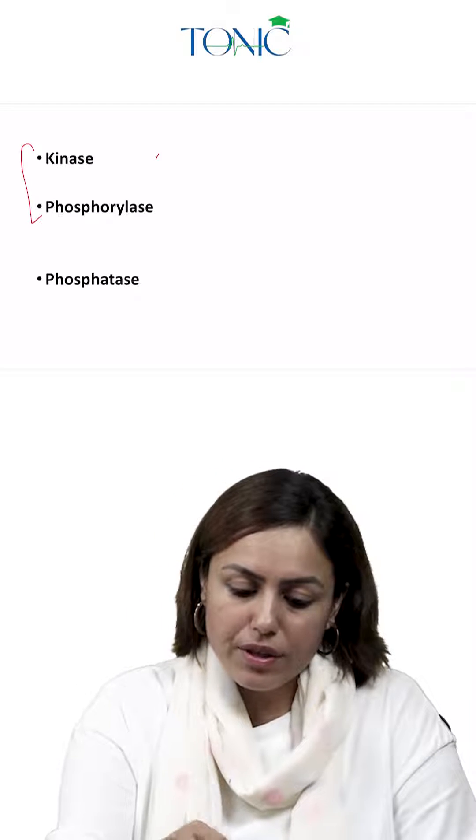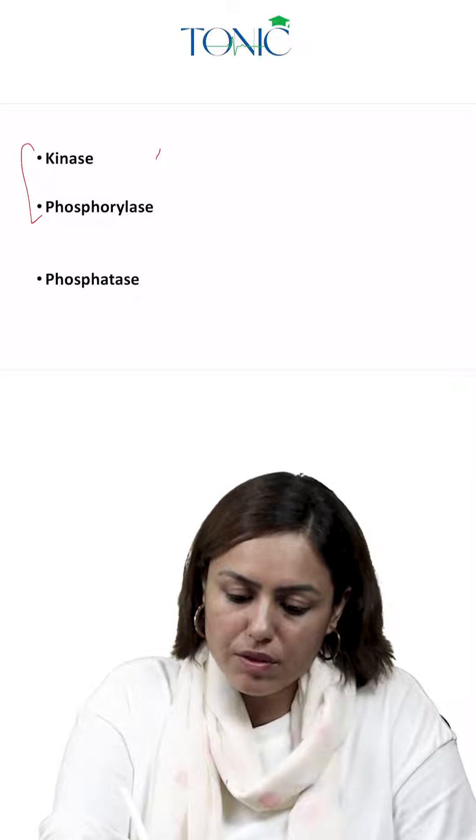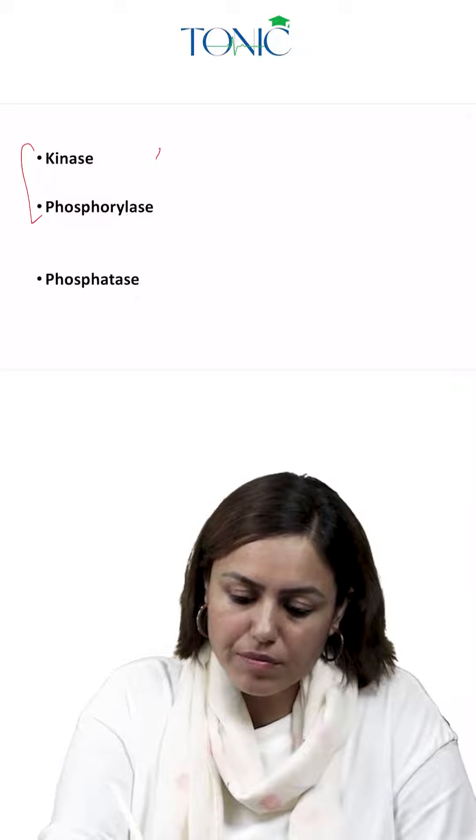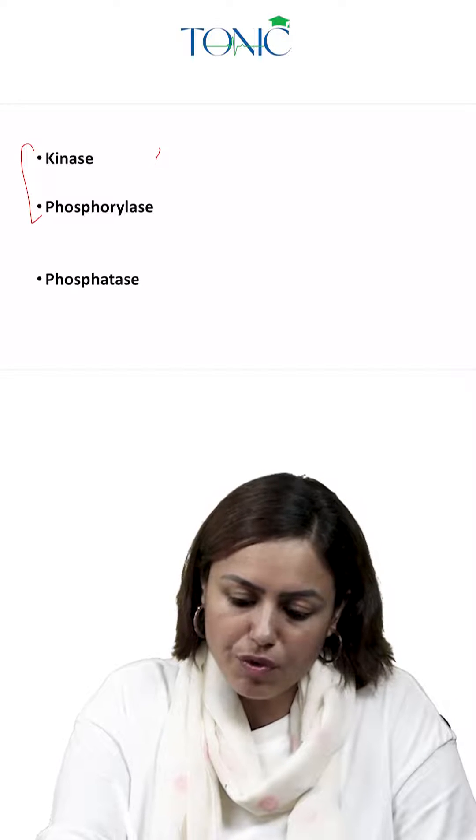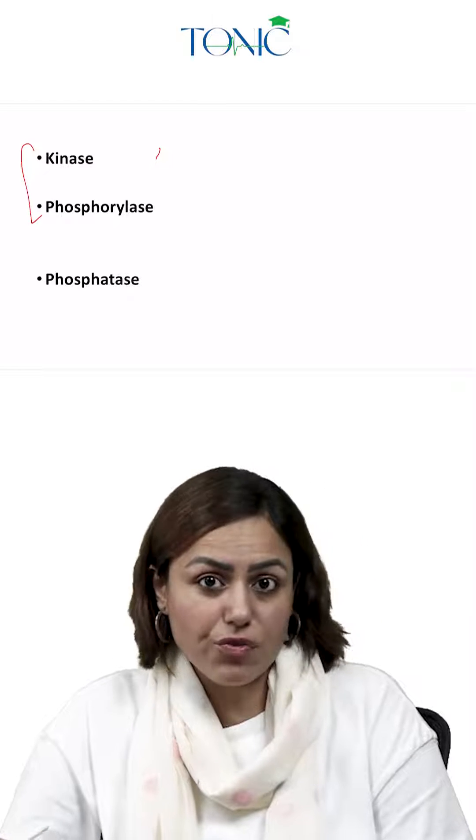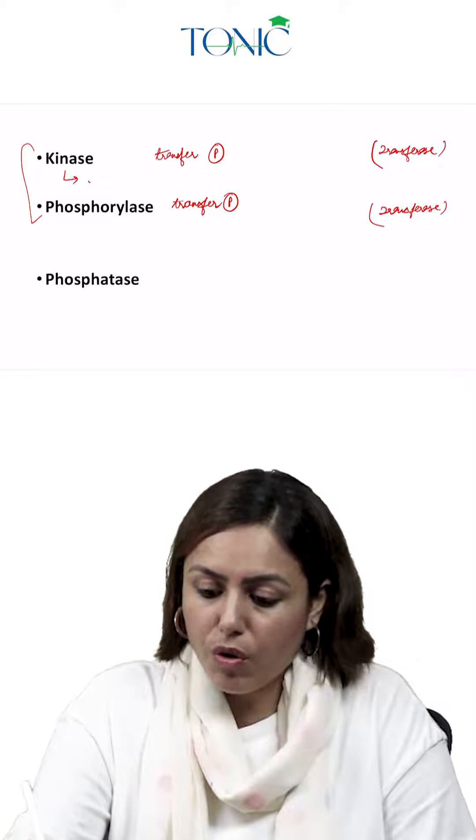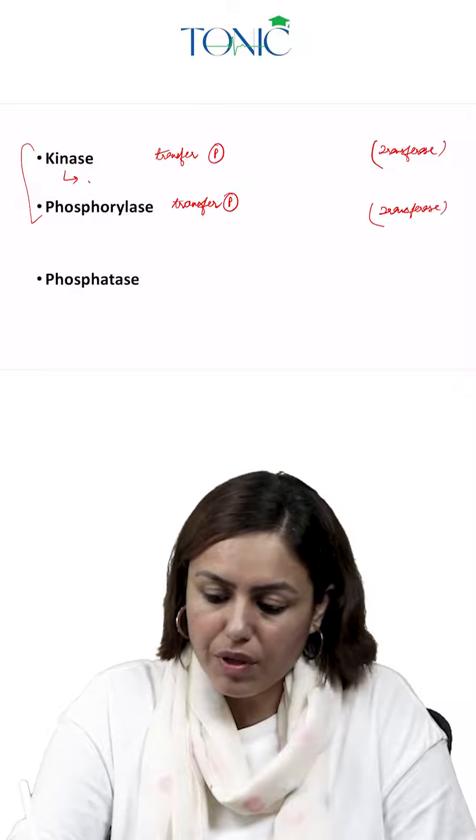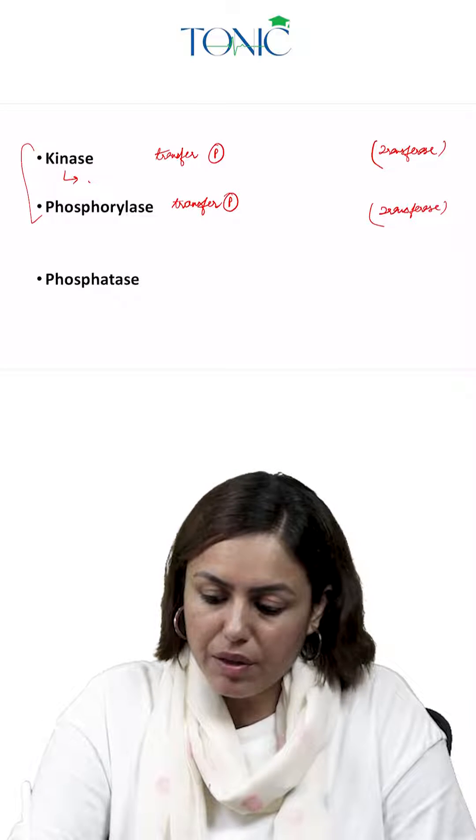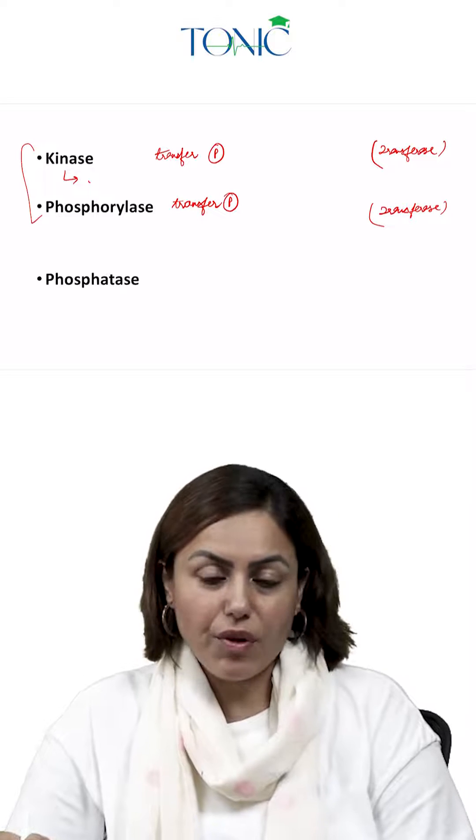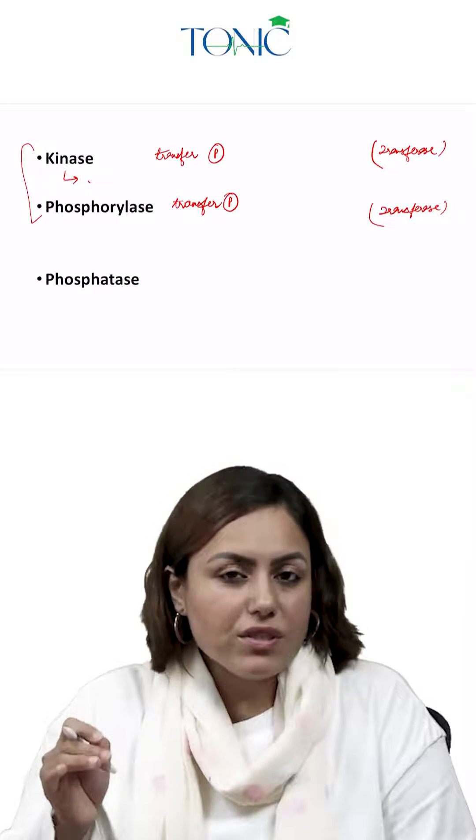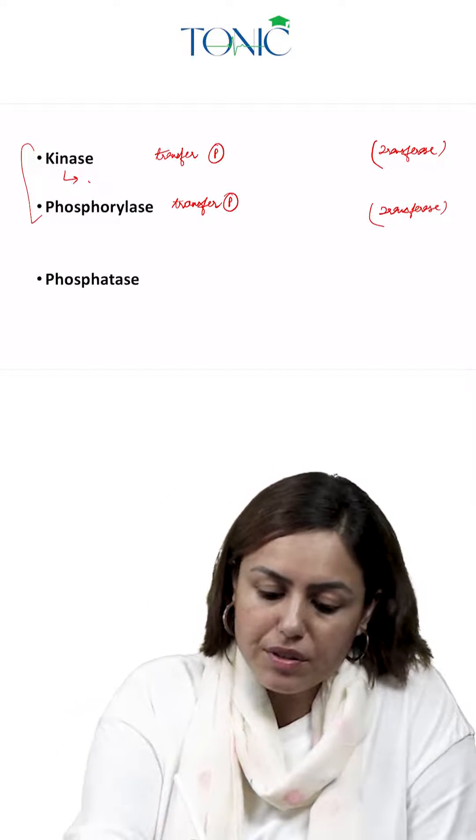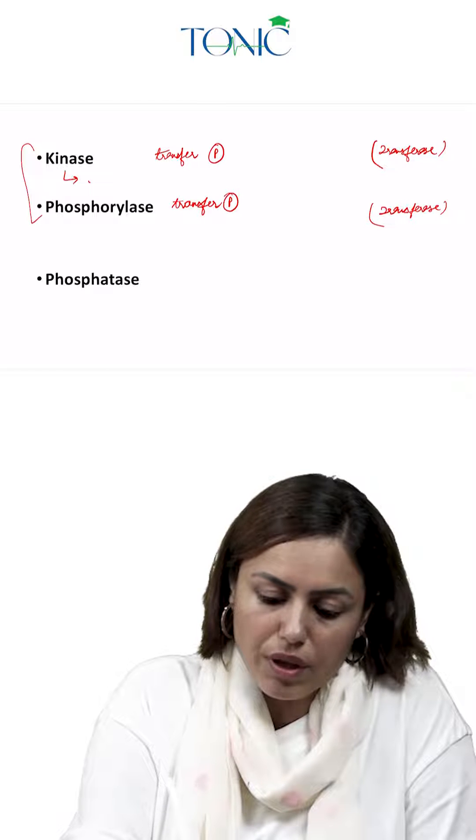Kinase and phosphorylase both transfer phosphate, so both belong to the transferase category of enzymes. That is enzyme category number two, transferase. But what is the difference? The difference is kinase transfers organic phosphate.